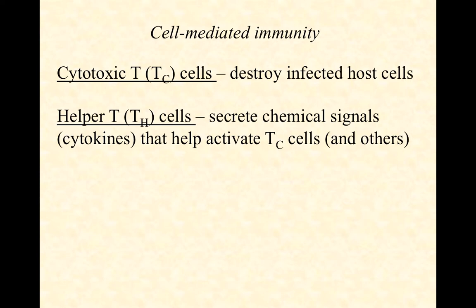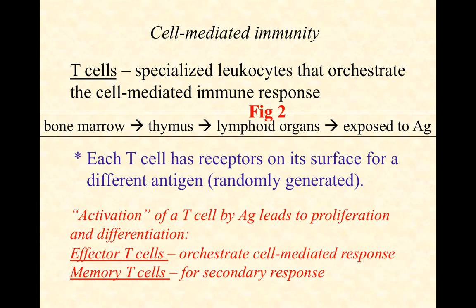So we're going to look at how helper T-cells get activated and then how they're involved in activating cytotoxic T-cells. What are T-cells? These are lymphocytes — specialized white blood cells that orchestrate the cell-mediated response. The helper T-cells are the cytokine producers that essentially give the thumbs up to a variety of cells, including cytotoxic T-cells and B-cells, that they should move forward with their response. The cytotoxic T-cells are going to go to the site of the infection and kill infected host cells.